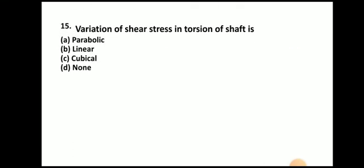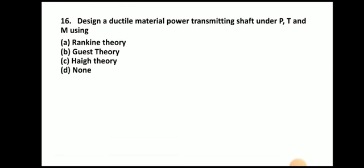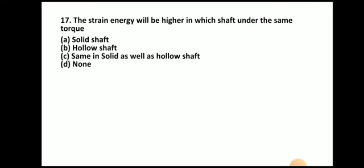Next question: variation of shear stress in torsion of a shaft — it is linear; shear stress varies linearly in torsion. Next question: to design a ductile material power-transmitting shaft under P, T, and M, Guest's theory is used. Among various failure theories (Rankine, Guest, Haigh), Guest's theory is used for ductile materials. The strain energy will be higher in a hollow shaft under the same torque.